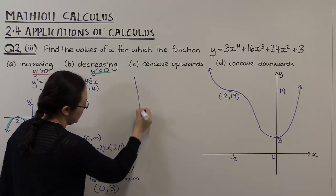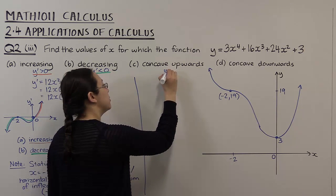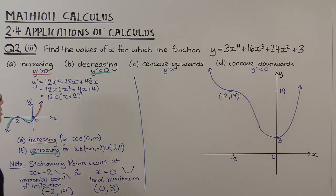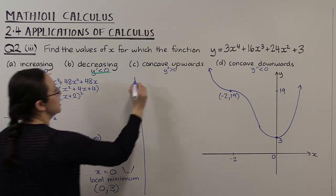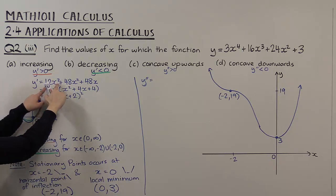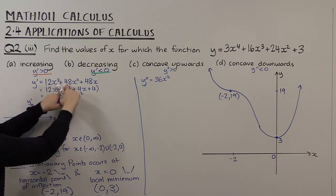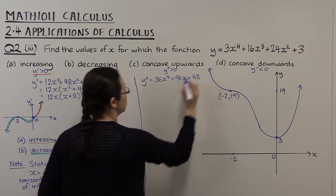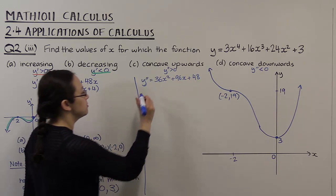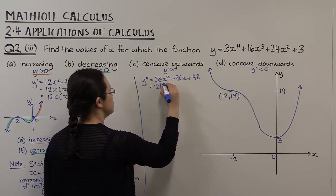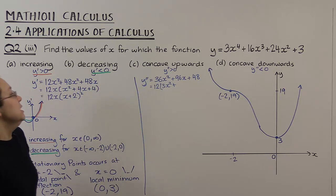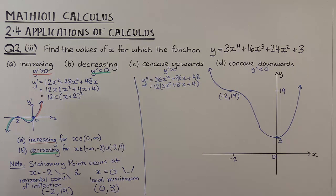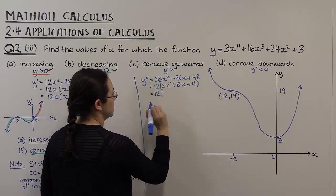Now for concave up and concave down: the curve is concave up when its second derivative is greater than zero, and concave down when its second derivative is less than zero. We have our first derivative, so we can find the second derivative. 12x³ differentiates to 36x², 48x² differentiates to 96x, and 48x differentiates to 48. We can factorize y'' — 12 comes out, leaving 3x² plus 8x plus 4.